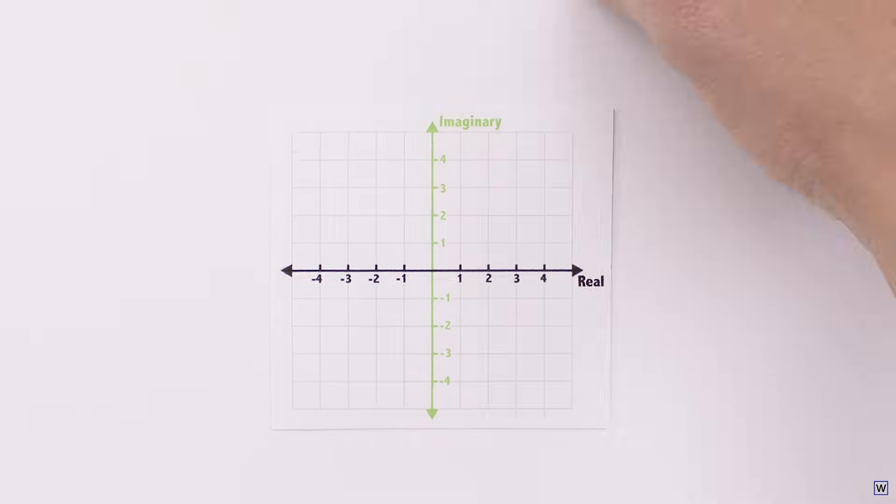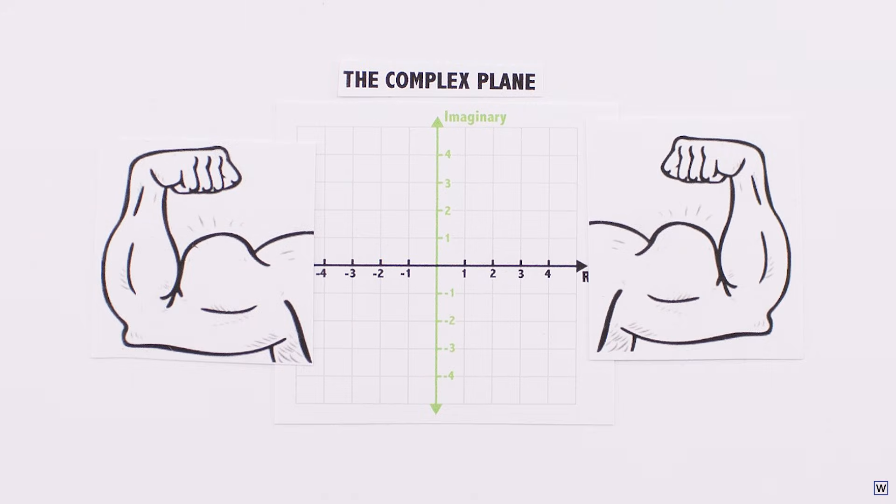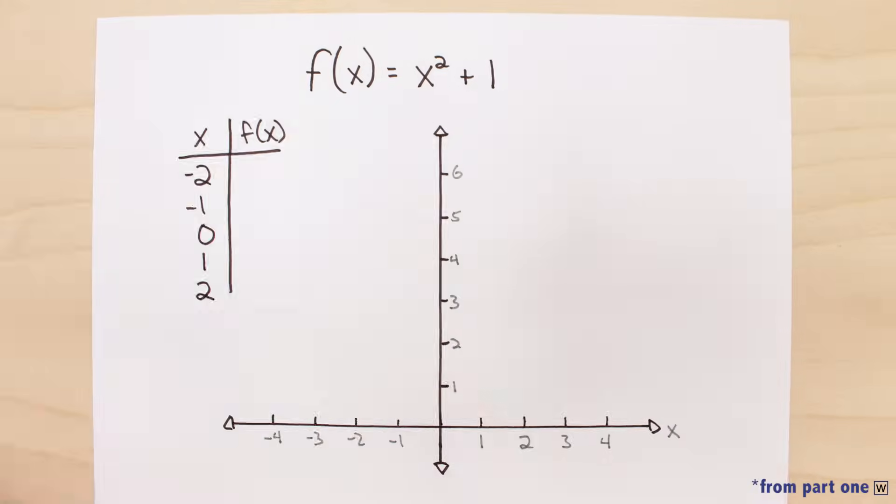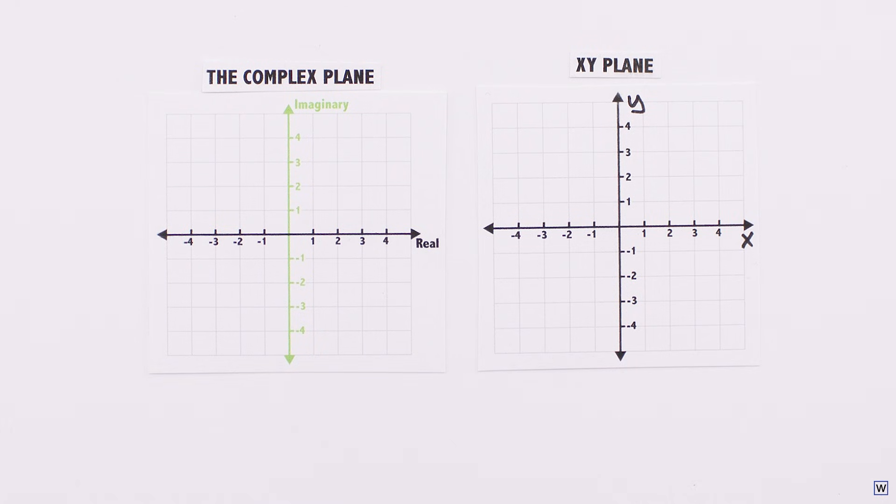Now that we've seen the complex plane, let's discuss why it's so powerful. We've seen two-dimensional planes before, where each axis represents a different quantity. In fact, we started our whole conversation with one. In a normal xy plane, there's no required connection between the dimensions.